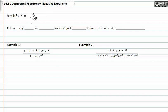If there is a plus or minus sign, we can't just move terms. Instead, make little fractions. If you look at a complex fraction and you see plus or minus signs in between each of the terms in the numerator and denominator, you need to rewrite it with little fractions in their place, because the exponents are negative.